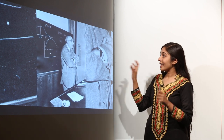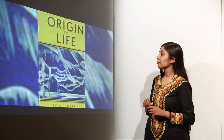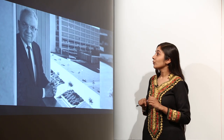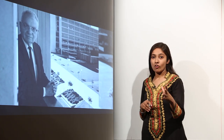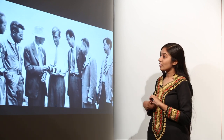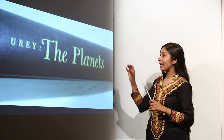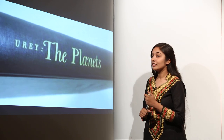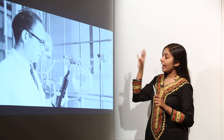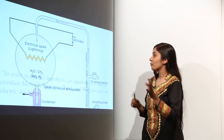Haldane was the scientist who worked with Oparin and gave the concept of the origin of life on earth. Two prominent scientists will be discussed: first, Urey, who was awarded the Nobel Prize for the discovery of the deuterium element. He wrote a book, The Planets, in which he mentioned the primitive atmosphere of the planet — that methane and hydrogen were present — and his graduate student Miller did an experimental setup to prove the theory laid down by Oparin.